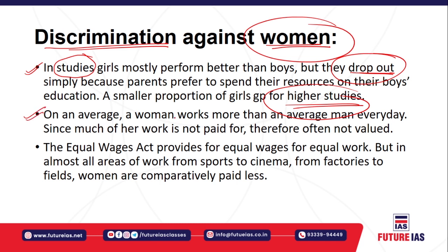Women work more than the average man. If a woman is residing in a rural area, she starts work from four o'clock in the morning — taking care of cattle, cooking food for the family, and continuing until night. Women do more work than men, but such work is not paid. Their work is not recognized, not valued, and not paid. That is also a form of discrimination against women.